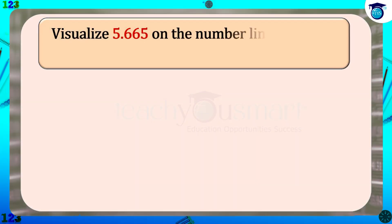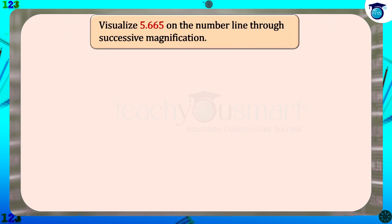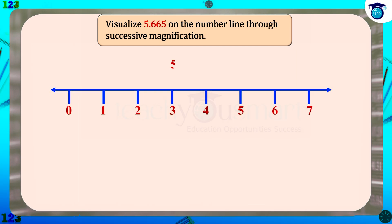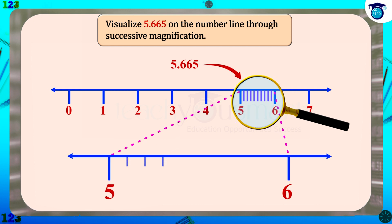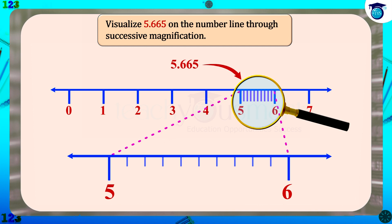Visualizing 5.665 on the number line through successive magnification. We know 5.665 lies between 5 and 6. On dividing the distance between 5 and 6 into 10 equal parts, we get the parts as 5.1, 5.2, etc. to 5.9.